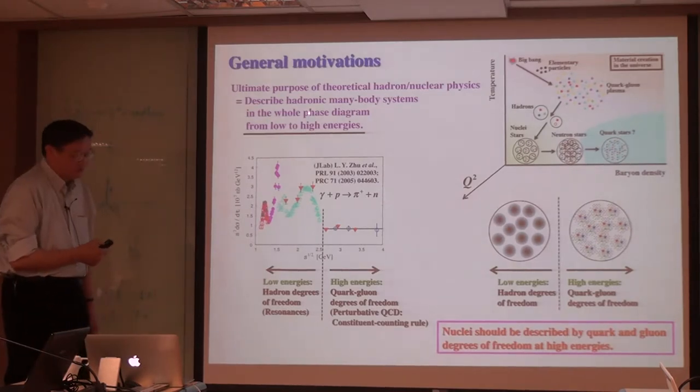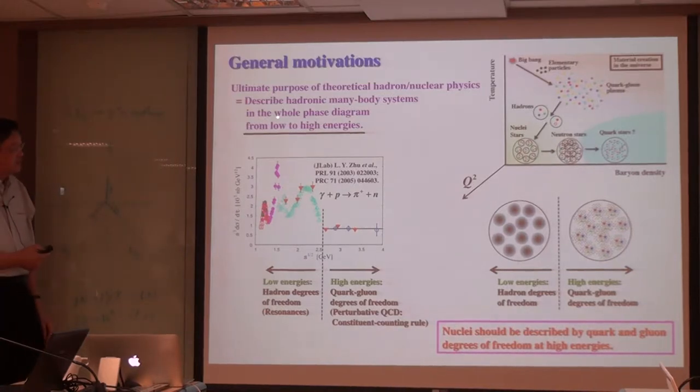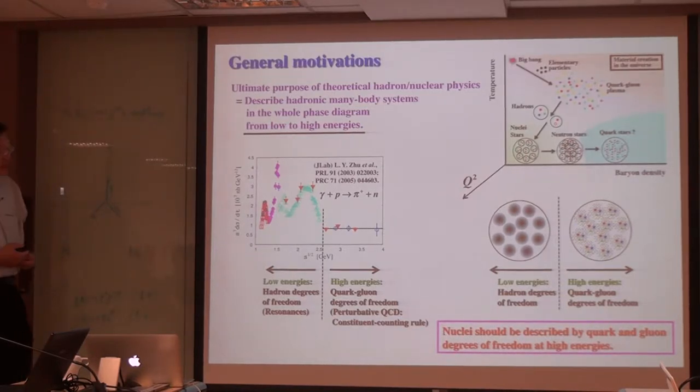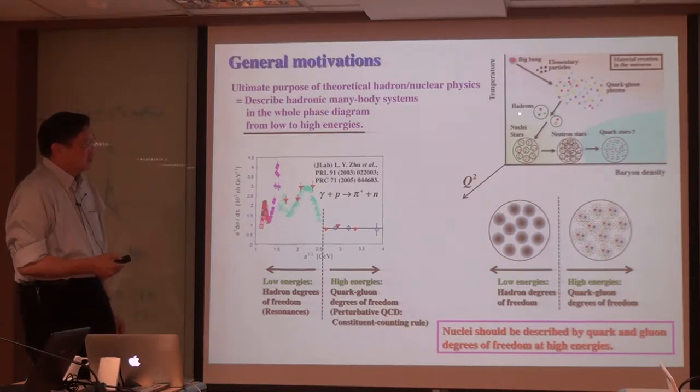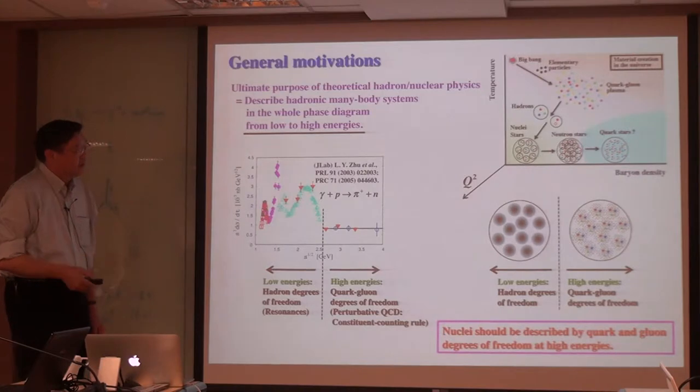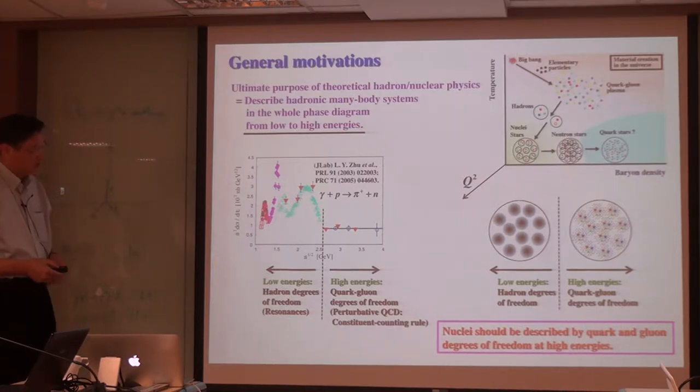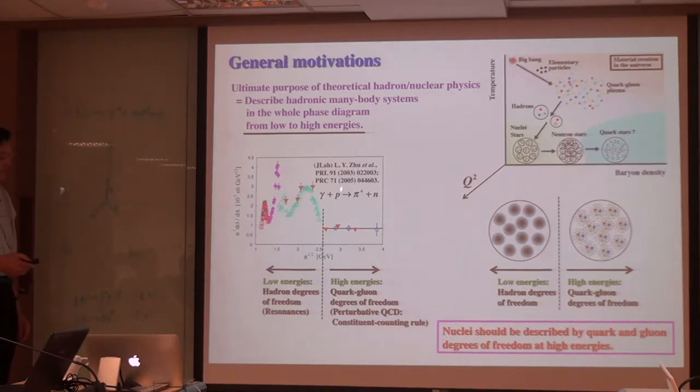The ultimate purpose of theoretical nuclear and hadron physics is to understand the creation of matter and property of interactions. As the universe cooled down, hadrons are formed, then nuclei and other forms. In addition to understanding this phase transition region, if we look at the momentum transfer, there should be interesting physics.